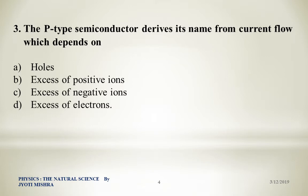Question number three: The P-type semiconductor derives its name from current flow which depends on — Option A: holes. Option B: excess of positive ions. Option C: excess of negative ions. Option D: excess of electrons. The right answer is holes, because in a P-type semiconductor the majority charge carriers are holes, so the current that flows is due to holes.